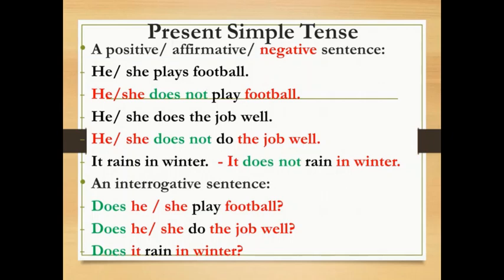Now, the present simple using 'does'. A positive or affirmative sentence, and the ones in red are the negative sentences. He plays football. She plays football. He does not play football. She does not play football. He does the job well. She does the job well. He does not do the job well. She does not do the job well. It rains in winter. It does not rain in winter.